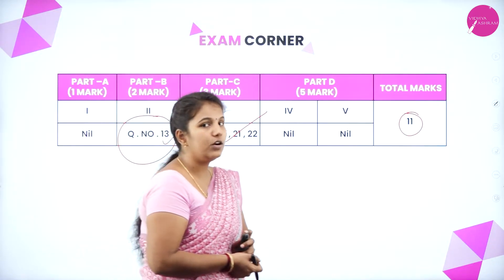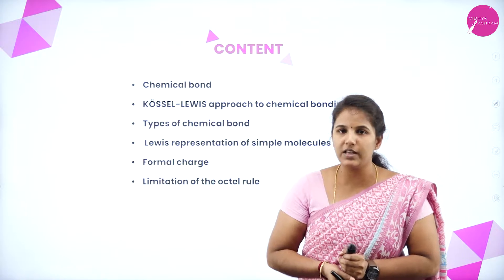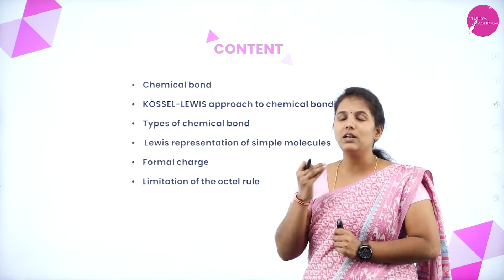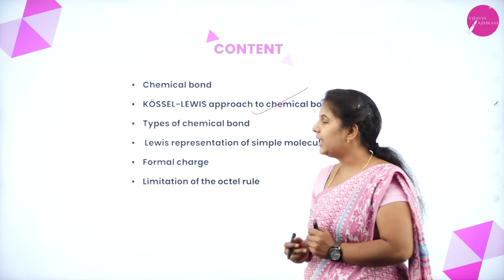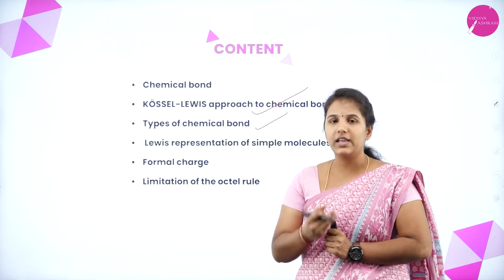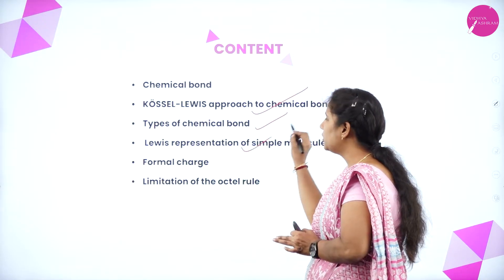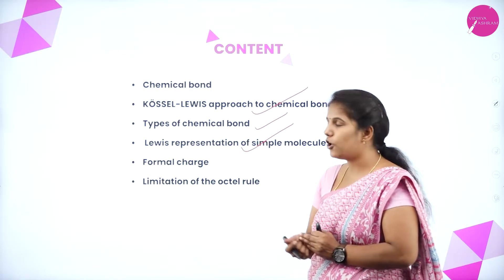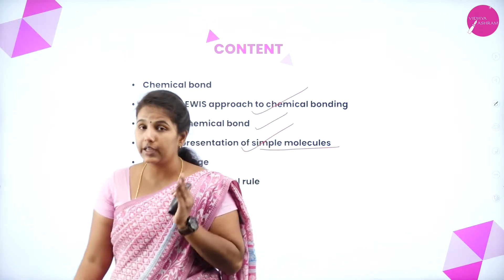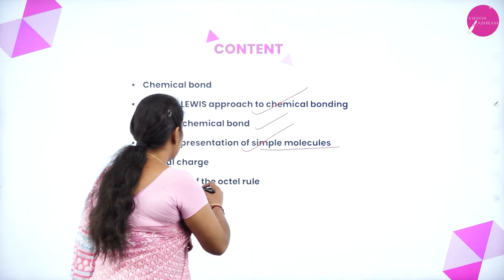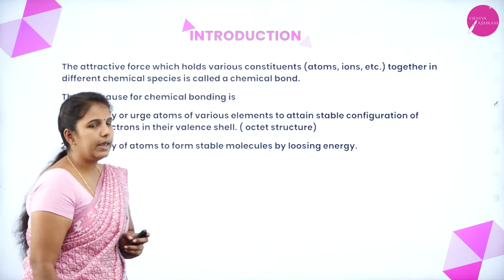Let's see what we are going to discuss in this unit today. We are going to understand what is chemical bond first. Later, we are going to understand the Lewis dot structure and approaches to chemical bonding. Then we'll understand the types of chemical bond, discuss more about the covalent bond, Lewis representation of simple molecules, formal charge calculation, and lastly the limitation of octet rule.